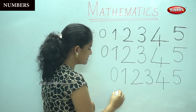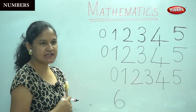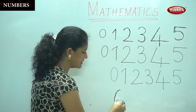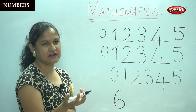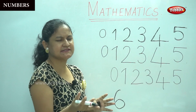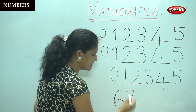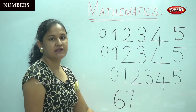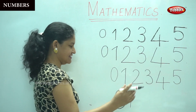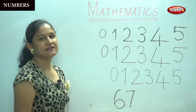So for 6, you will write a small curve and a round. Shall we do it again? A small curve and a round. Isn't it easy, children? Next we have number 7, which is very simple. You have a sleeping line at the top and a slanting line down. It's easy, children? So shall we write number 7 again? It is a sleeping line at the top and a slanting line down.